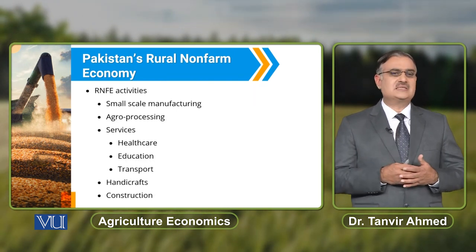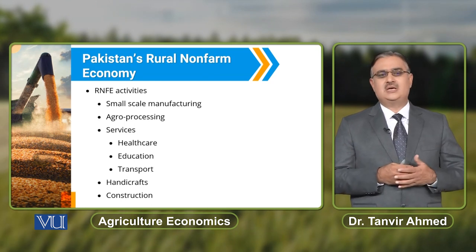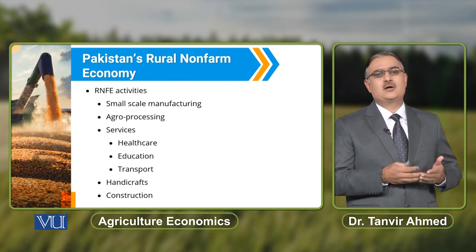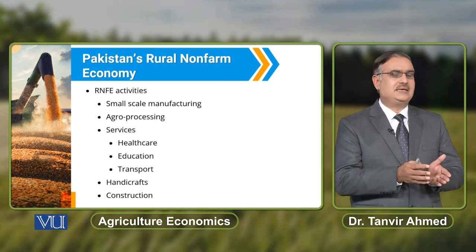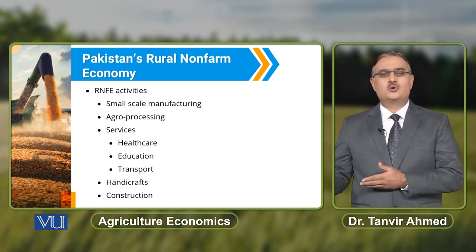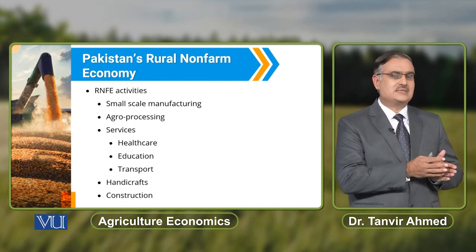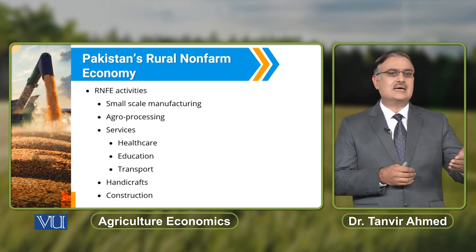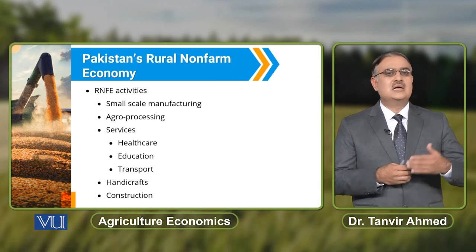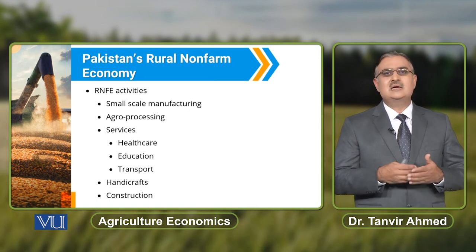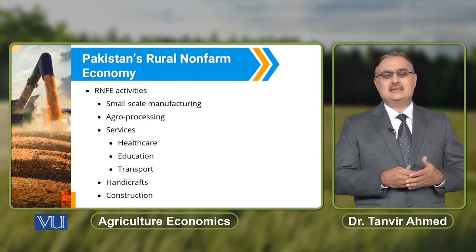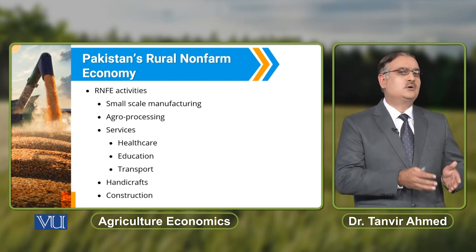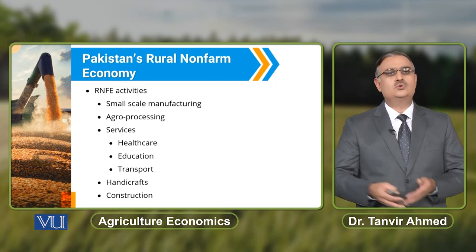Rural non-farm economy activities typically include small-scale manufacturing and agro-processing, which depends upon the output of the agricultural sector. The establishment of agro-processing units results in the flourishing of the agricultural sector. The services component includes healthcare, education, and transport services. Availability of transport facilitates farmers in transferring their output to market.